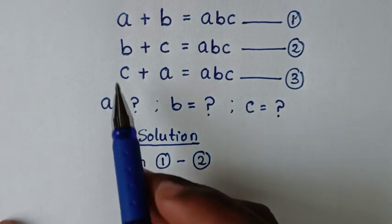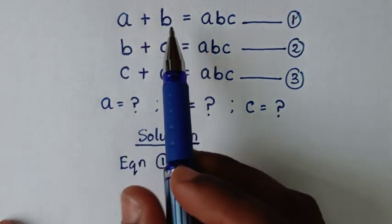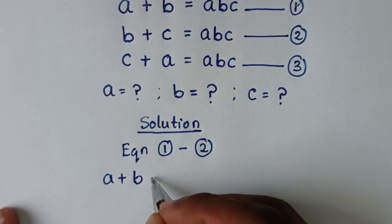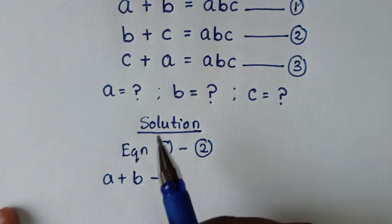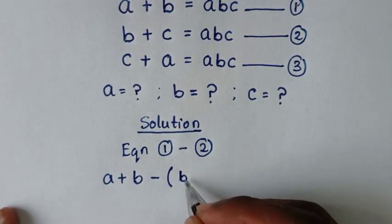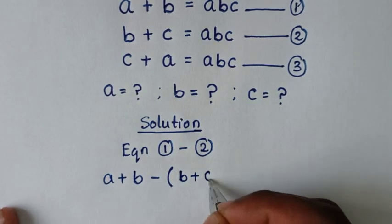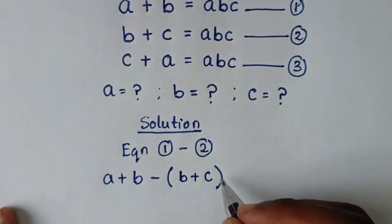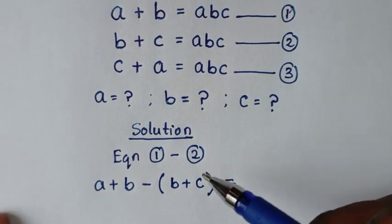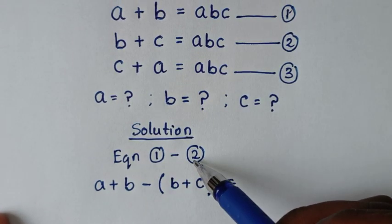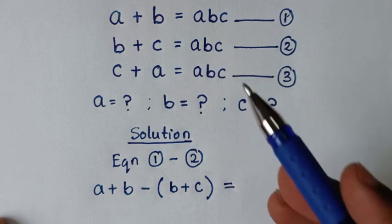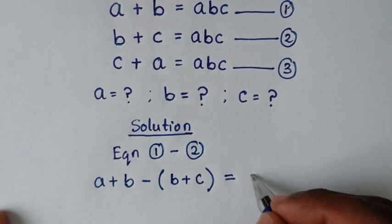We'll start by taking equation 1 minus equation 2. From equation 1 on the left side, it is a plus b; minus equation 2 on the left side, it is (b plus c). On the right side, equation 1 minus equation 2 is abc minus abc, which is 0.